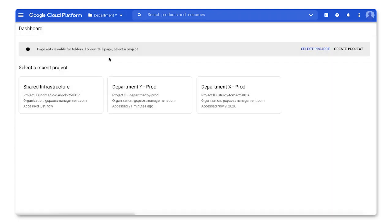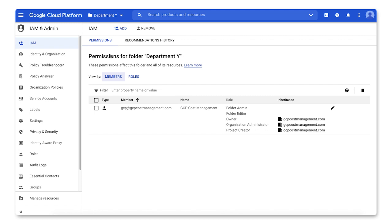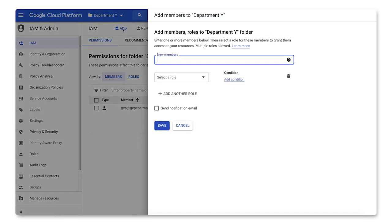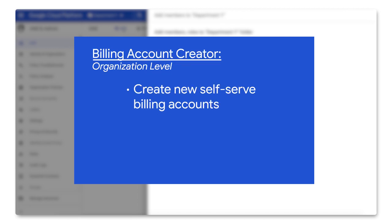At the project or folder level, project billing managers can assign a project's billing account when they have the billing account user role on the target billing account. They can also disable a project's billing.